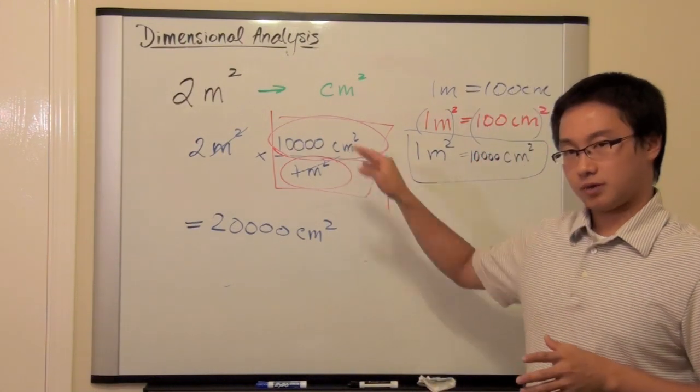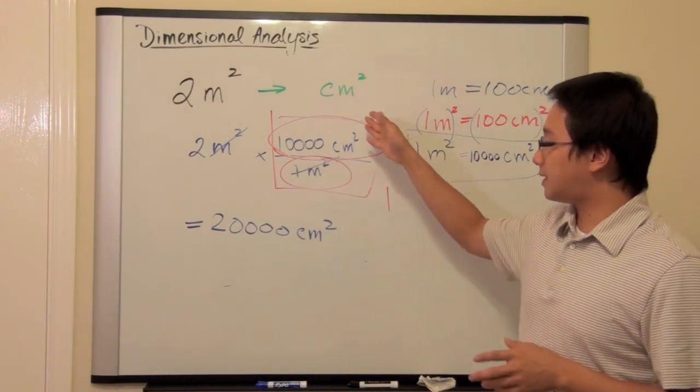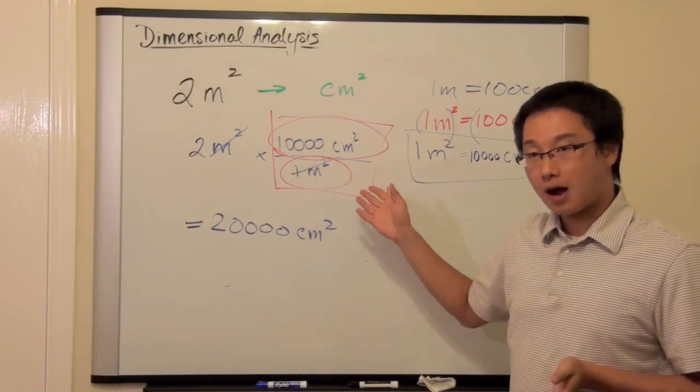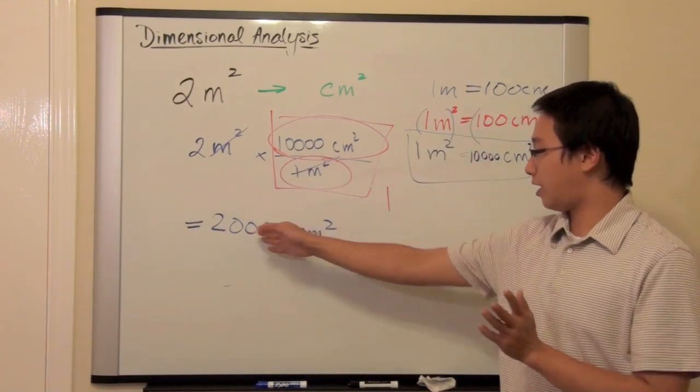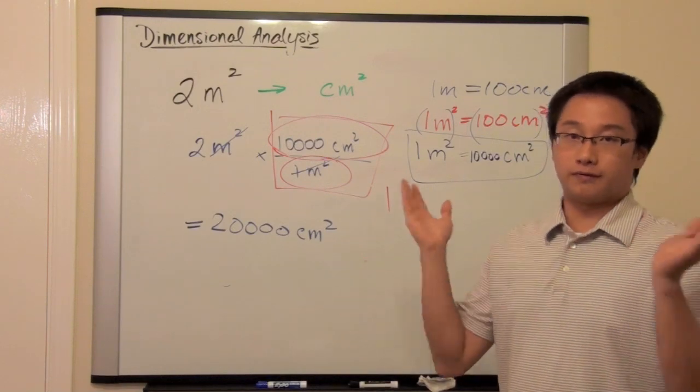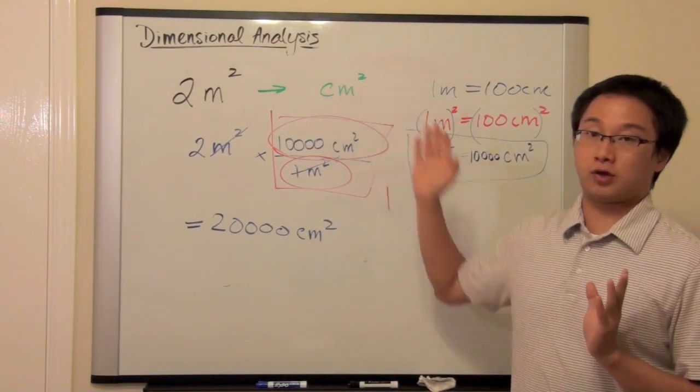Now, we do this. We put the 10,000 centimeters square on top, 1 meter square in the bottom. And if we do the calculation, it turns out perfectly. We have the answer in terms of centimeters squared. It is beautiful, it is perfect. We got the perfect answer for this particular question.